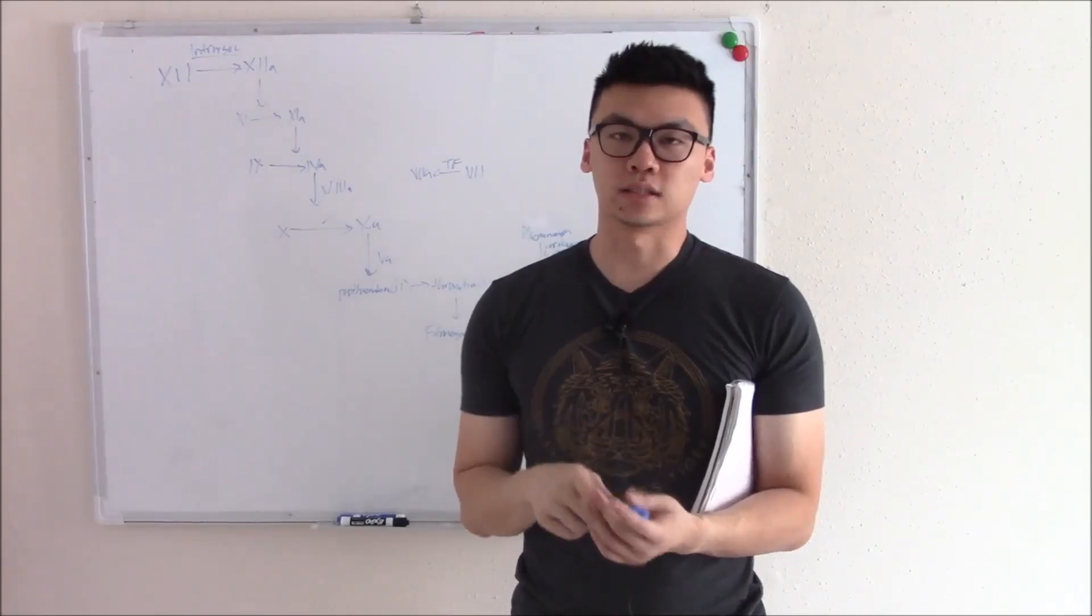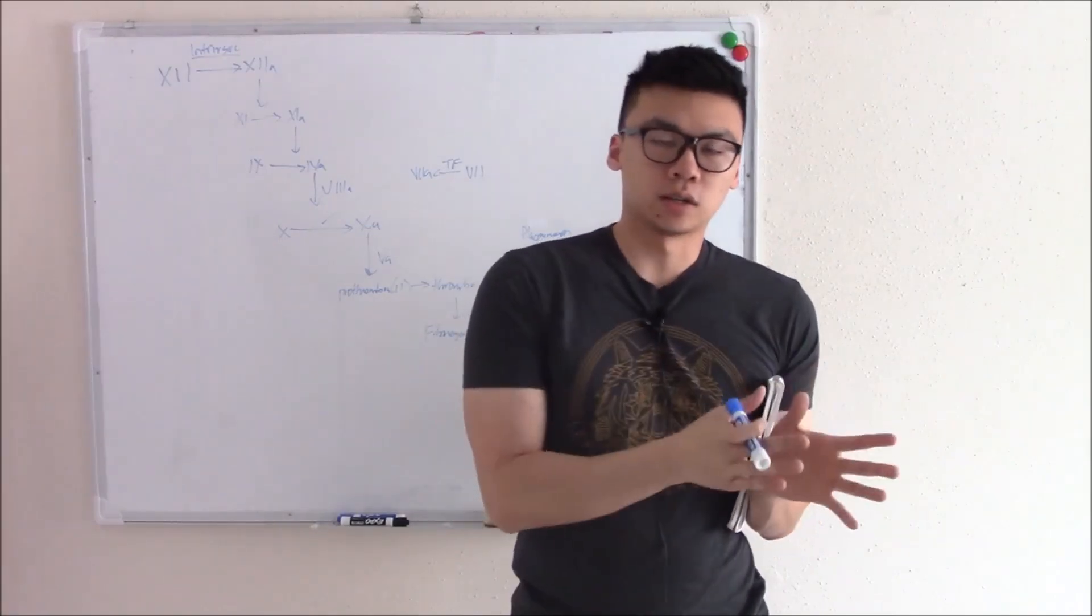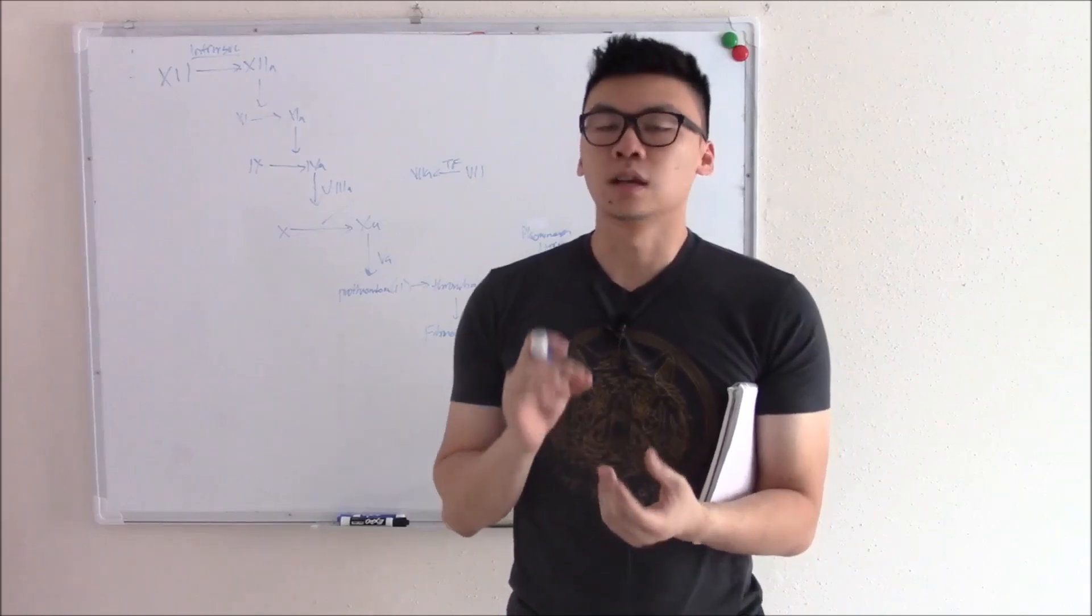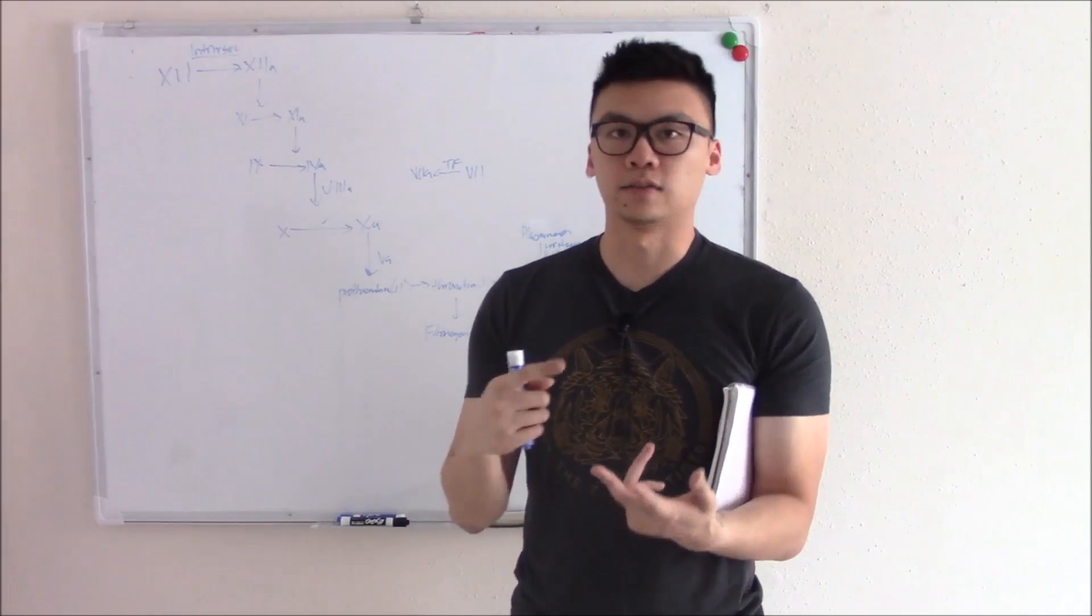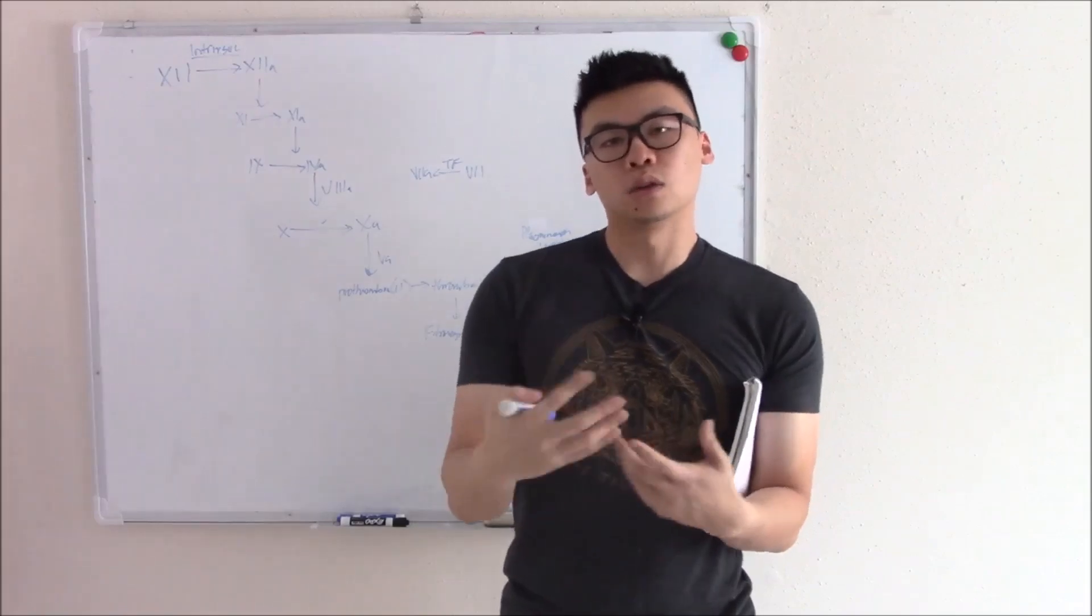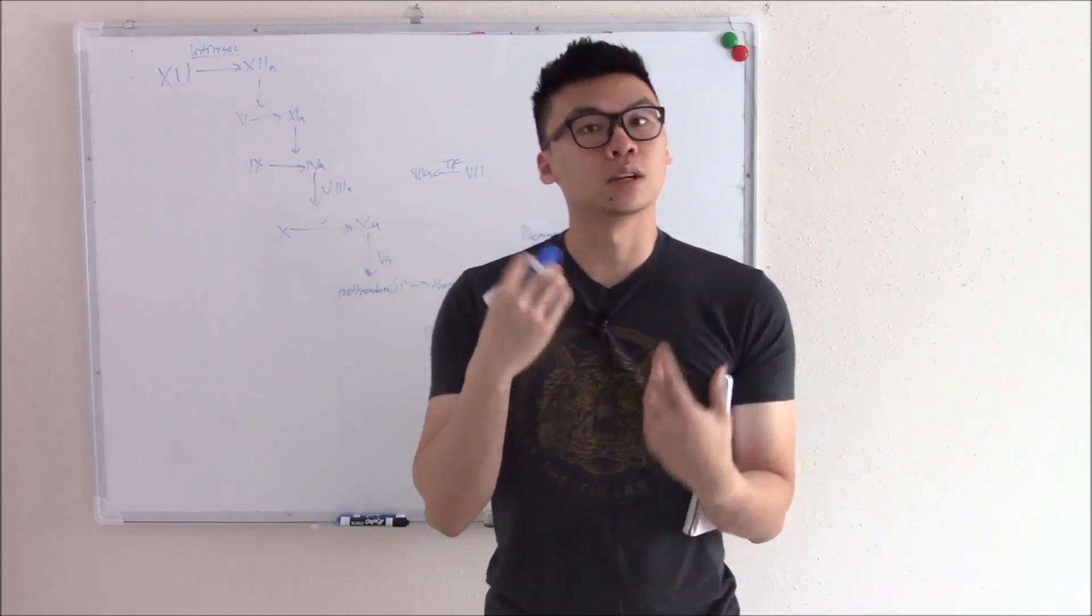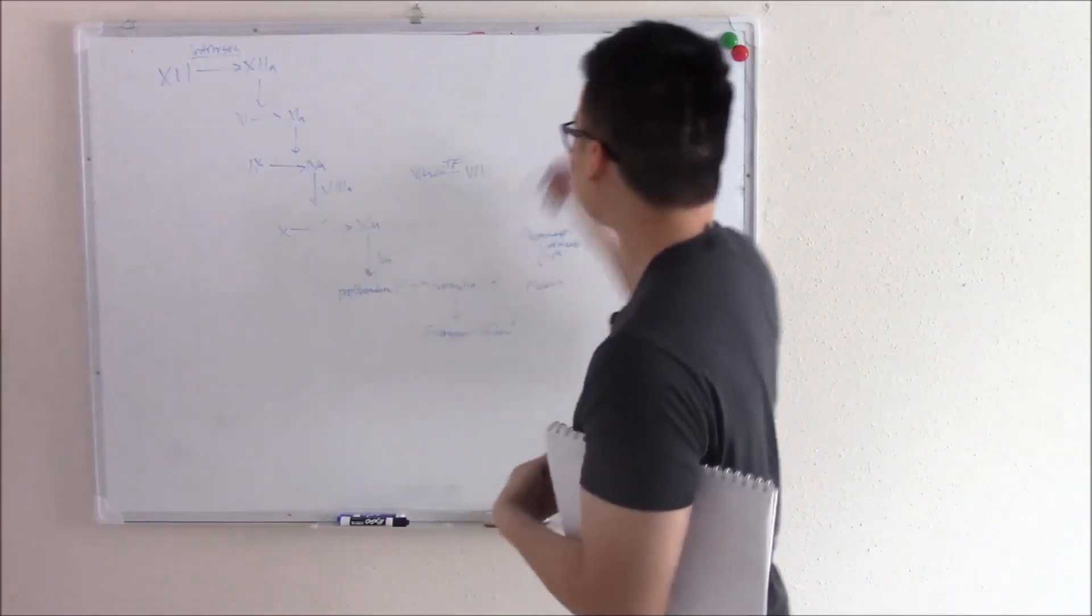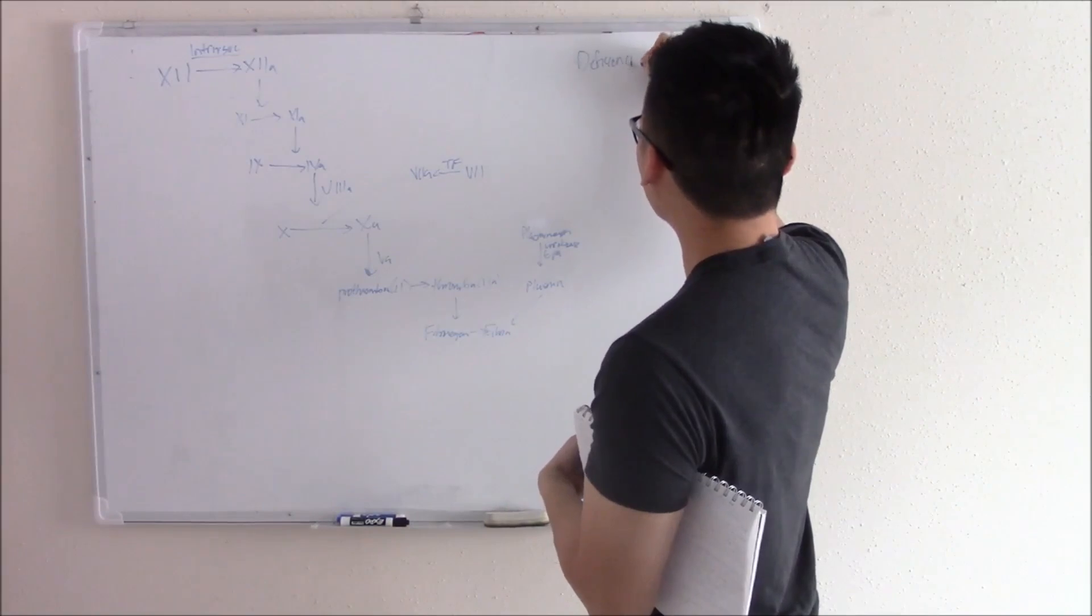In this video, we're going to continue our talk on coagulation factors. Problems in heme often stem from either too little of something or too much of something. In our last video, we talked about too little coagulation factors - deficiency from liver disease, vitamin K deficiency, or induced with drugs like heparin and warfarin. This talk is another continuation on too little coagulation factors. In our next video, we'll talk about too much. So deficiency is the name of the game of this video.